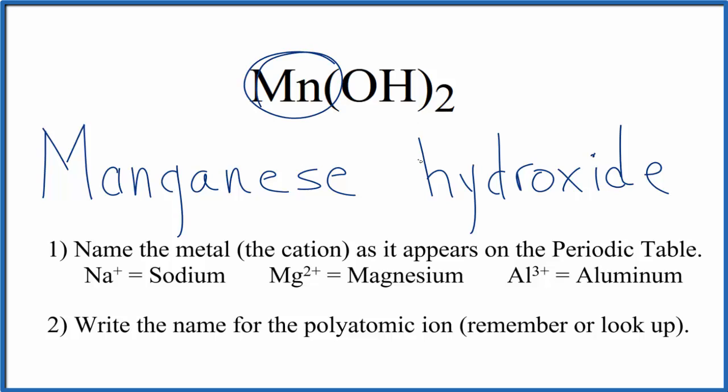But manganese is a transition metal, so we have to think about the charges on the ions when we write the name. We know that hydroxide is 1-, and we have two of them. So two times 1- is 2-. The manganese has to be 2+.